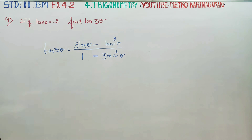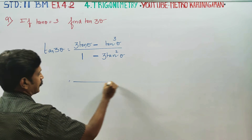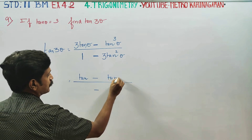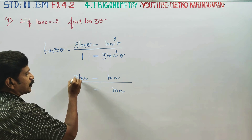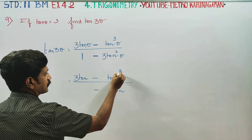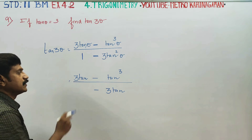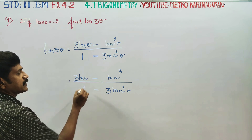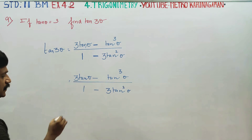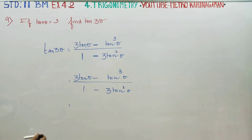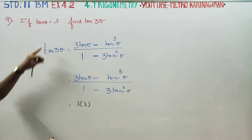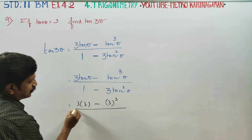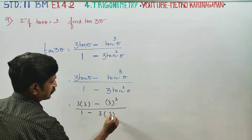If you are wondering how much the puzzle is, it's easier to begin. Let's start with the column. Here is minus, here is tan, here is tan, here is tan. So we have 3 tan theta minus tan cube theta, by 1 minus 3 into tan theta whole square.